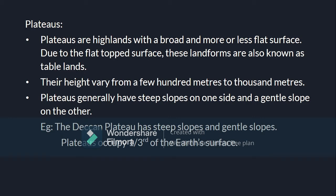Our next landform is plateaus. Plateaus are highlands with a broad and more or less flat surface. Due to the flat top surface, these landforms are also known as table lands. Their height varies from a hundred meters to a thousand meters. Plateaus generally have steep slopes on one side and a gentle slope on the other. For example, the Deccan Plateau has steep slopes and gentle slopes. These plateaus occupy one-third of the earth's surface.